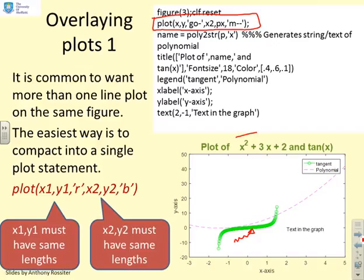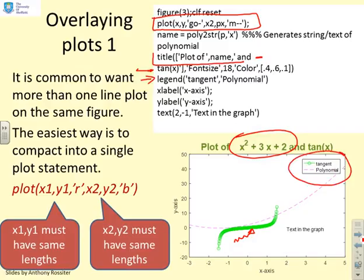I've added the polynomial definition to the title, and the title colour has been changed to green. A legend has been added: MATLAB assigns the first legend entry to the first plotted line — 'tangent' — and the second entry to the second line — 'polynomial'. So as long as you get comfortable with this syntax, MATLAB handles it all for you.